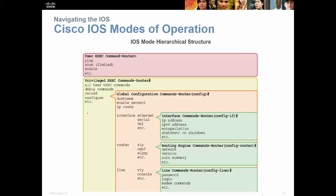When we talk about modes of operation, you need to understand where you are located in the IOS at all times, because knowing your location tells you what you can do. When you first get to the IOS, you are in user exec mode. When you elevate your privileges, you get into privileged exec mode. Then you go into global configuration mode, where you can configure interfaces, set passwords, and set login information. This is called a hierarchical structure.